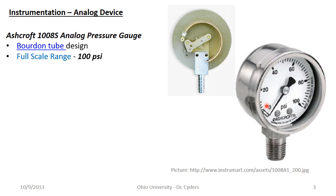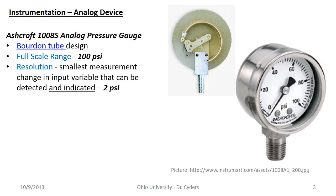This gauge has a full-scale range of 0 to 100 psi, meaning the full-scale range is 100 psi — the difference between the two numbers, not the absolute value. The resolution is the smallest change in the input variable — in this case pressure — that can be detected and indicated. Looking at the gauge, the smallest graduations are 2 psi apart, so 2 psi is the smallest resolution. We can't really register much of a change beyond what we can read on the face of the device.